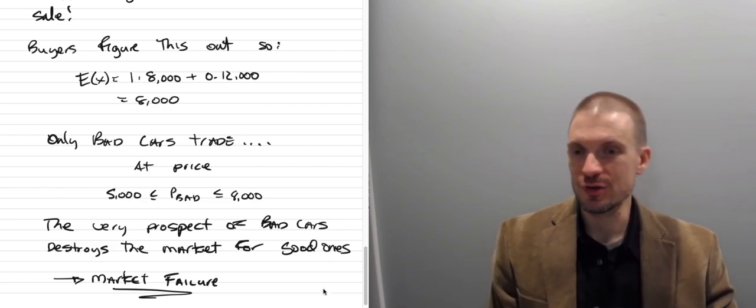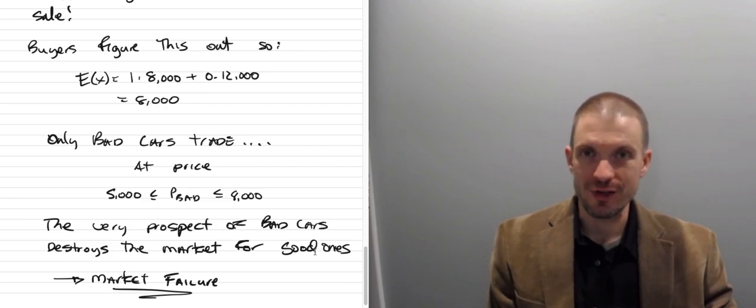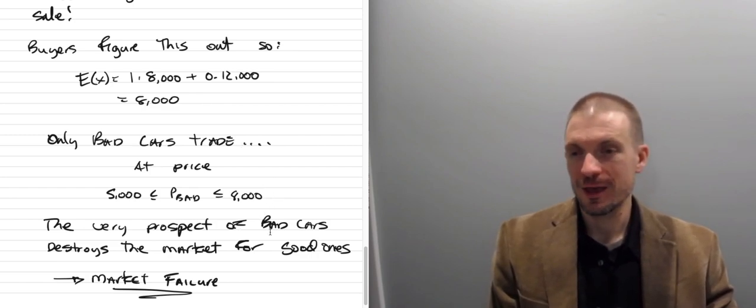So this happens in the used car market and is actually like the motivation for having third-party guarantees, for having Carfax, Car Fox, right? For having warranties, different sorts of things to try to get around the asymmetric information problem, being able to look up the VIN of cars and so on and so forth. But there's other markets where adverse selection can be a problem and where you can think of a market for a lemon.